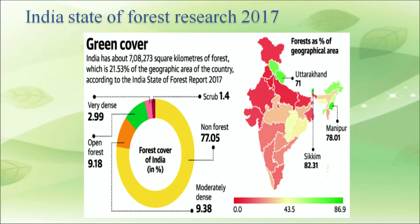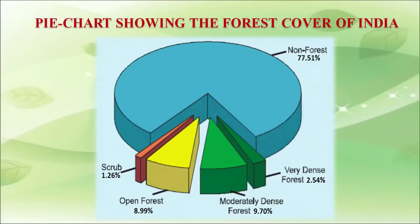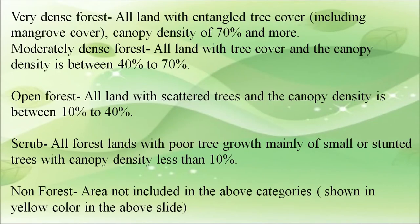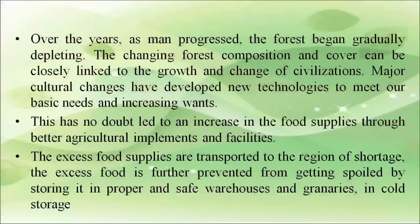There is enough evidence to show that dense forests are covered in India. The variety and distribution of forest vegetation is large. Indian forest types include tropical evergreen, tropical deciduous, temperate, coniferous forest, swamp, and mangrove. The pie chart in the next slide indicates the percentage of forests covered in India, showing very dense forest, moderate dense forest, open forest, scrub, and non-forest categories. Over the years, as man progressed, the forest began gradually depleting. The changing forest composition and cover can be closely linked to the growth and change of civilization.